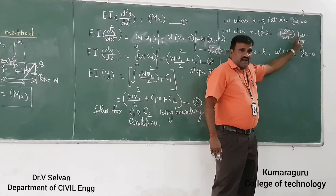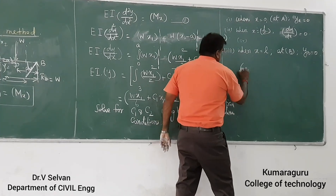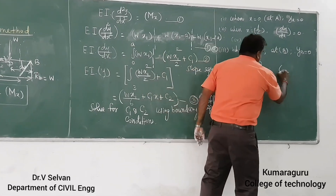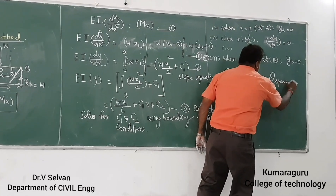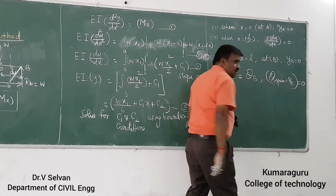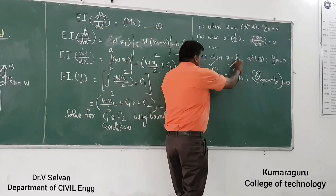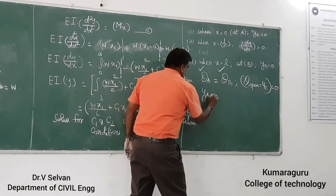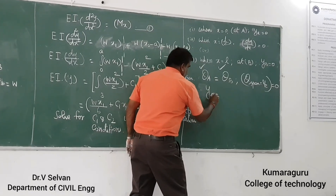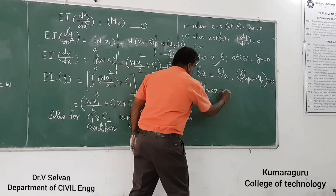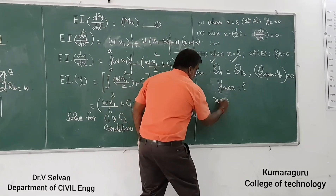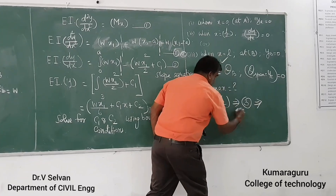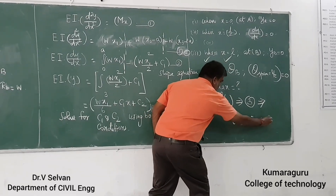Based on these boundary conditions, you can find the slope at A, slope at B, and also the slope at the middle point when x is equal to L/2. For a symmetrically loaded beam, the maximum deflection occurs at the center, and at that point the slope is zero.